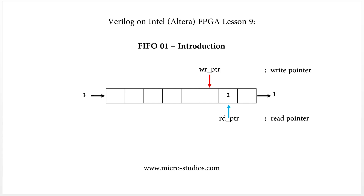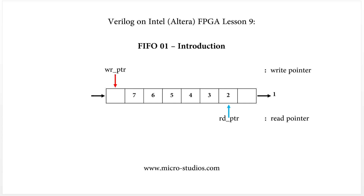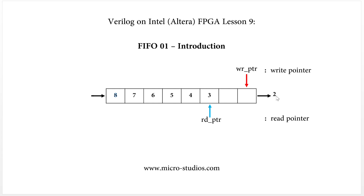If we have more data needed to write into the FIFO, and the write pointer reaches the end, it will go back to the head of the FIFO. The data item 8 will be written into that position. And if we read data out, the read pointer moves to the next one, and the value 2 moves out.